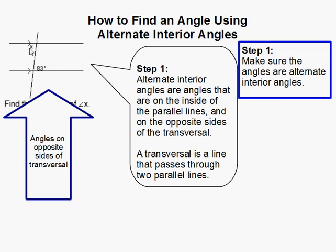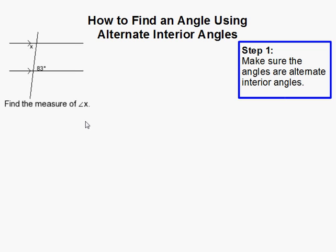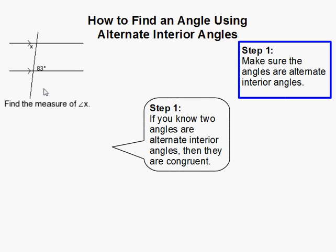And in fact our angles are on opposite sides, so that's why they're interior and they're alternate. So then once you know that angles are alternate interior angles, then you know they're congruent by definition.